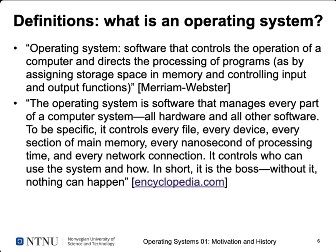Let's start with definitions: what is an operating system? The Merriam-Webster dictionary defines it as software that controls the operation of a computer and directs the processing of programs — for example by assigning storage space in memory and controlling input and output functions. That's very general, but it tells us operating systems are software, this software controls the computer, and it tells programs how they are processed.